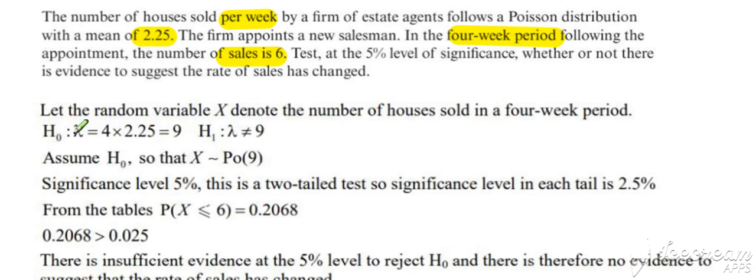First of all, when you're setting up your null and alternative hypotheses, make sure you adjust your lambda value. On this occasion, whether or not there is a change, so therefore the alternative hypothesis is a not equal to. So lambda 9, Poisson set up, and null and alternative hypotheses set up a two-tailed 5% significance test.